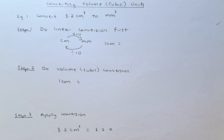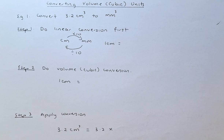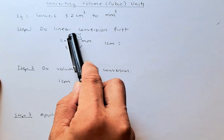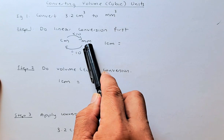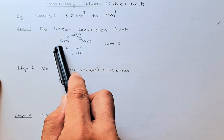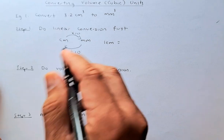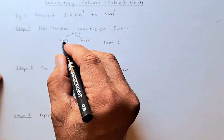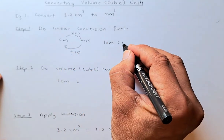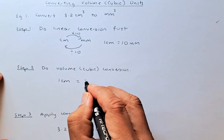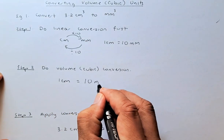Just like what we did in the area conversion, the first step is to do a linear conversion first. To convert centimeter to millimeter you multiply by 10. If you convert millimeter to centimeter you divide by 10. So 1 centimeter converted to millimeter: multiply 1 by 10 and you get 10 millimeter. So 1 centimeter is 10 millimeter.